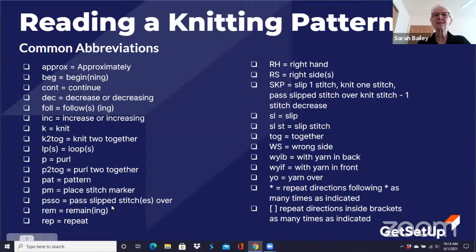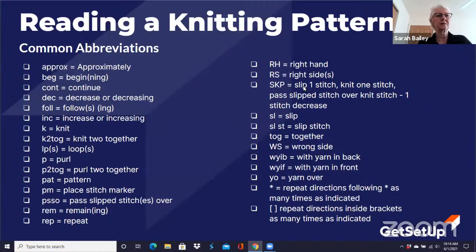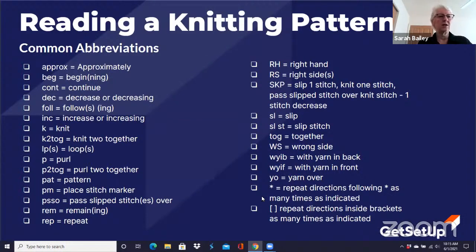'PM' means place a stitch marker. 'PSSO' is pass slip stitch over. 'Rem' is remaining. 'Rep' is repeat. You've got 'RH' for right hand, 'RS' for right side. 'SKP' means slip one stitch, knit one stitch, then pass the knitted stitch over — another type of decrease. 'SL' is slip, 'sl st' is slip stitch. 'Tog' is together. 'WS' is wrong side of your work. 'Wyib' is with yarn in back, 'wyif' is with yarn in front. 'YO' is yarn over. And you're going to see either an asterisk or a set of brackets, which tells you to repeat either what follows the asterisk or what appears between the parentheses.